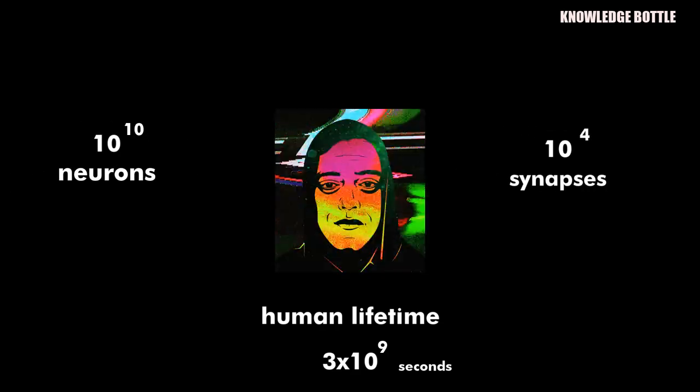And computing the essence of human life is something that has been done and it roughly translates to 3 times 10 to the power of 9 seconds. And with the human brain having 10 to the power of 10 neurons and 10 to the power of 4 synapses on average, where a synapse can store roughly 6 bits of information, we should still have enough space to contain a human's life of sensory input.